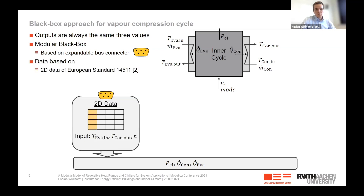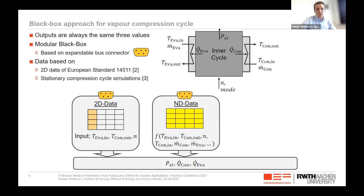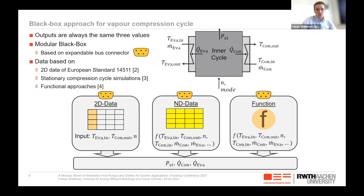We already implemented three publicly available choices for black box models: first, based on a two-dimensional data table using the European standard EN 14511, which manufacturers must supply when selling a heat pump or chiller; second, based on stationary compressor cycle simulations in Python; and third, on functional approaches — for example, a Carnot efficiency function as already implemented in the IBPSA library.